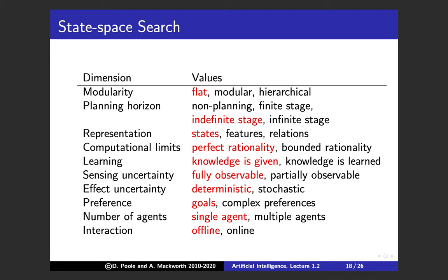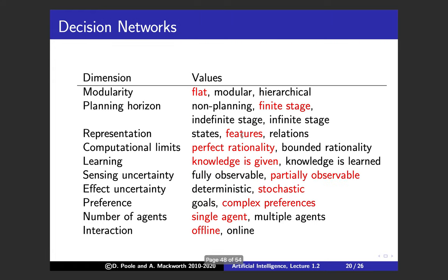Later we'll do deterministic planning using features, which are much more compact than states. Then we'll look at decision networks — moving to finite stages, features, perfect rationality, given knowledge, but now partially observable and stochastic with complex preferences, still single agent and offline. That's the arc of this course. Thanks — talk to you soon in class.